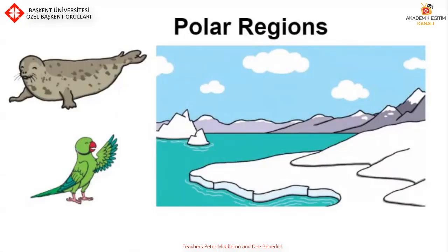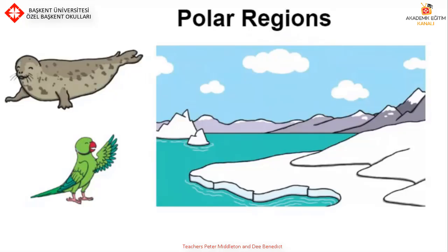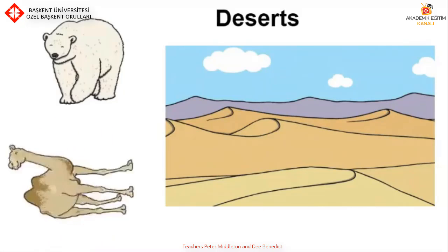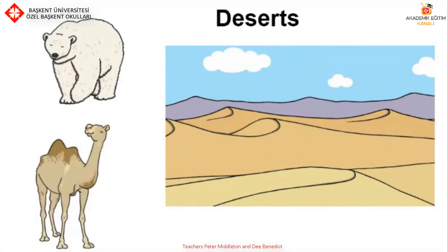Let's look at some of our habitats. Here are the polar regions. Which animal lives in the polar regions — the seal or the parrot? Why? That's right, it's the seal. Why do you think the seal lives in the polar regions? Where does the parrot live? Here is the desert and the animals are a polar bear and a camel. Which animal lives in the desert? That's right, it's a camel. Why does the camel live in the desert? Where does the polar bear live?